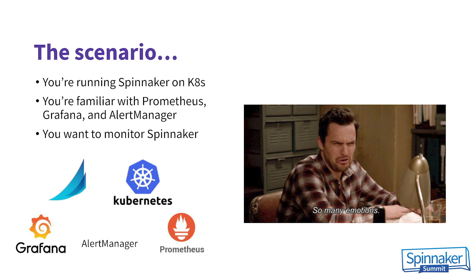The scenario we're talking about today is you're running Spinnaker on Kubernetes. You're an operator of Spinnaker and you're familiar with Prometheus, Grafana, and Alert Manager. You want to monitor Spinnaker — you want to understand what's going on in your application. You want to make sure that you're giving enough resources to Spinnaker to service all of your users, which are your internal developer teams.